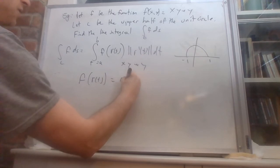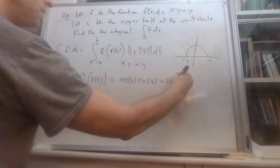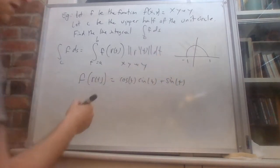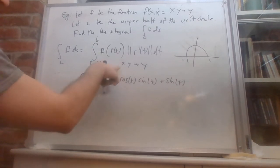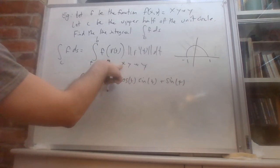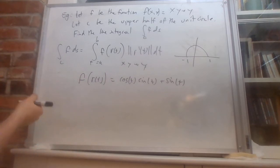Because that's what we replaced. R of t gives us cosine of t in place of x, and sine t in place of y. And that is all we need. We're ready to set up our integral.